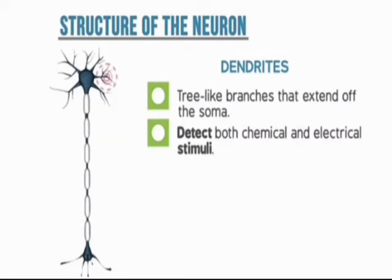Now we will discuss the structure of the neuron in detail. First come the dendrites. Dendrites are basically tree-like branches that extend from the soma. They detect both chemical and electrical stimulation. They are highly branched cytoplasmic processes of the nerve cell body, responsible for receiving information and transmitting it to the cell body.